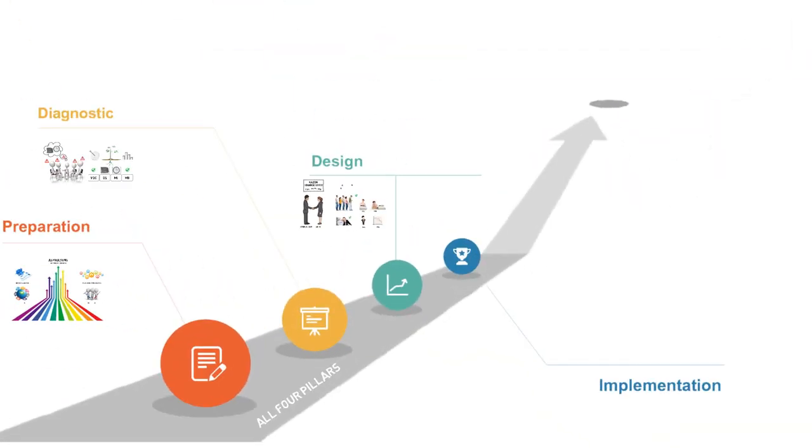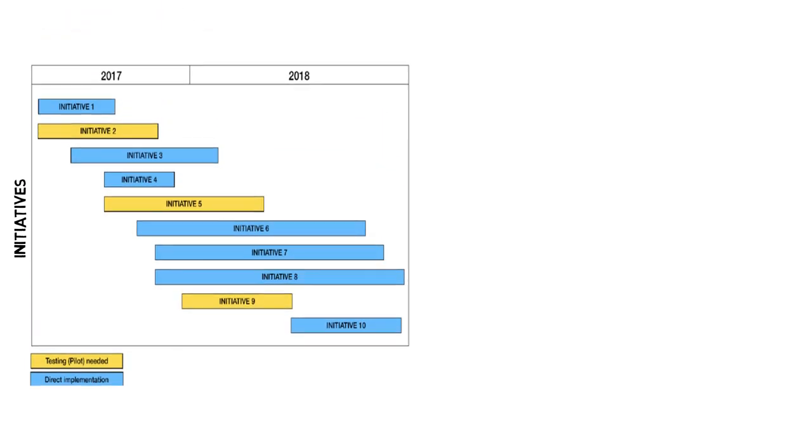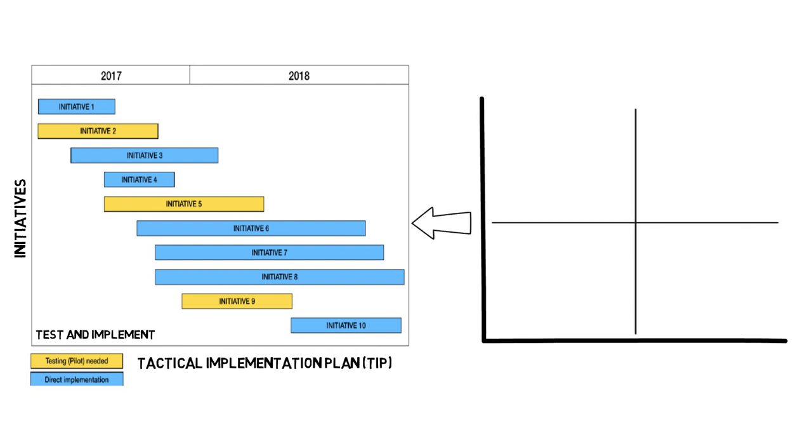Implementation. During this phase, the initiatives generated during Kaizen events are finally to be tested and implemented according to the Tactical Implementation Plan, which follows the prioritization given by the 80-20 Pareto principle.